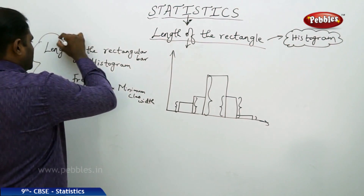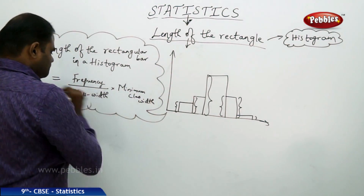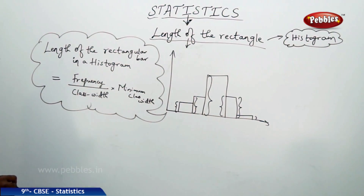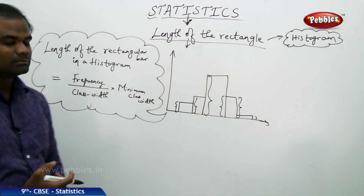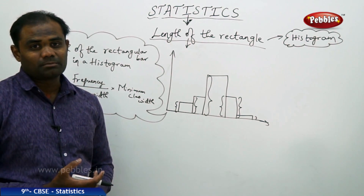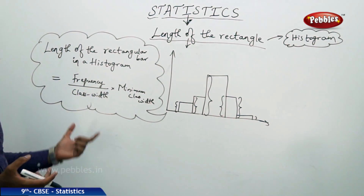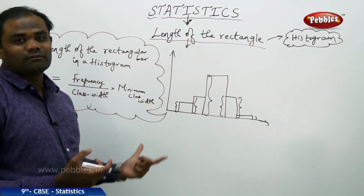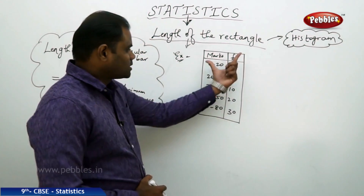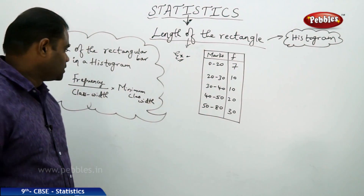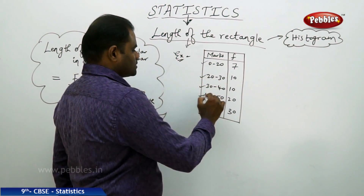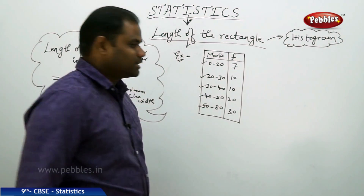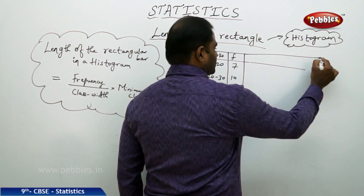This is the formula we are going to use in finding the length of the rectangular bar: frequency by class width into minimum class width. Let's take an example problem to calculate the length of the rectangle bars for each class interval and see how we can find the length of each rectangular bar.